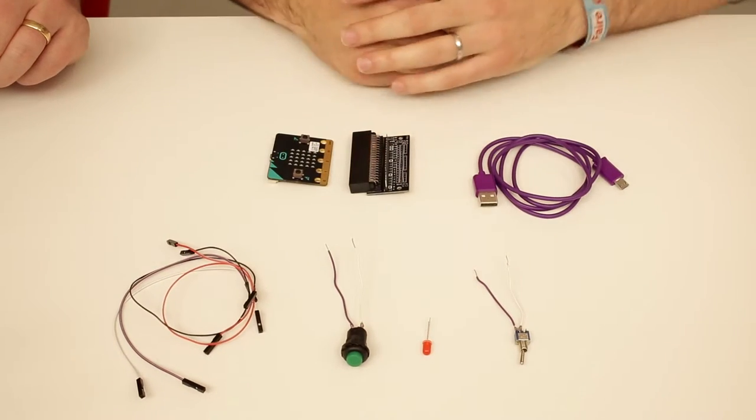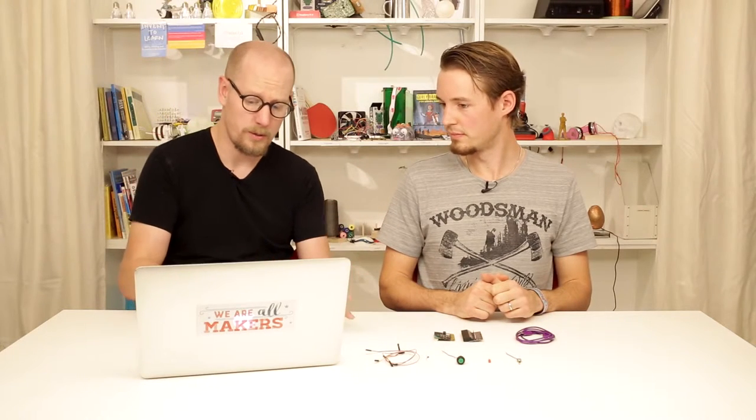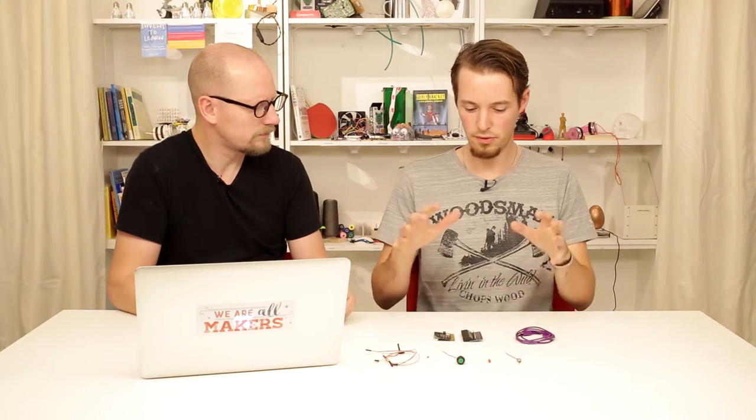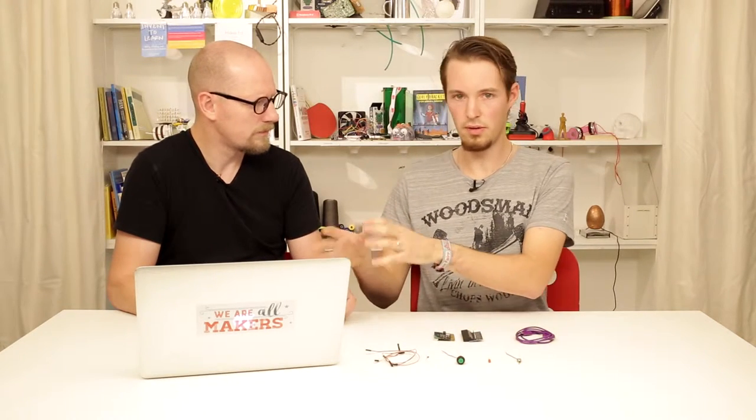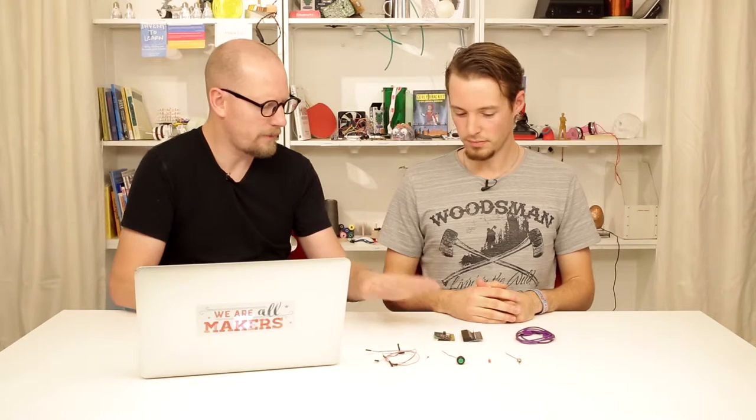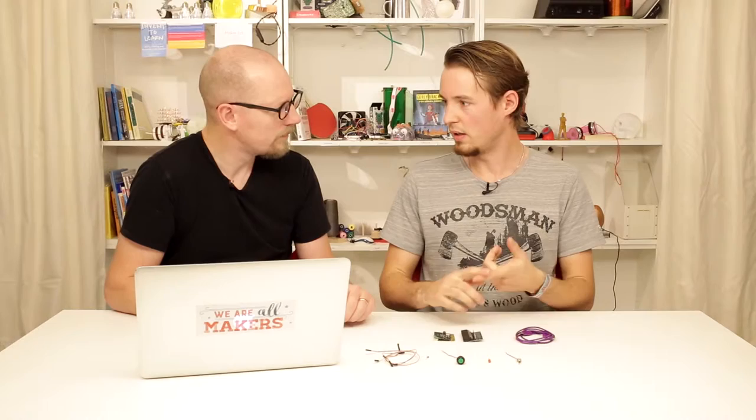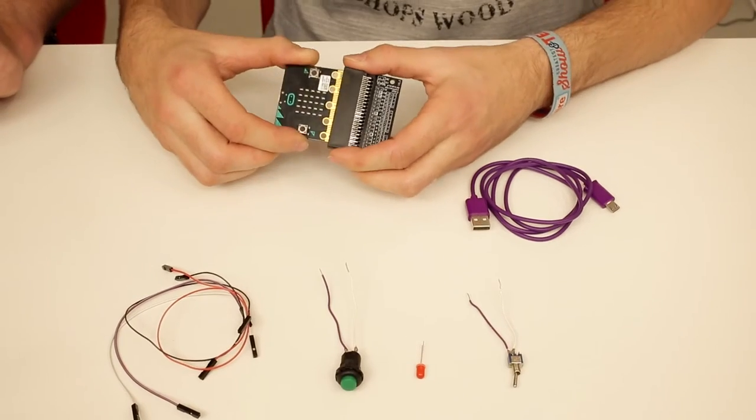We need to connect the electronics and code. Where do we start? Basically it doesn't matter if you first connect the electronics or do the coding, but let's start with the electronics. Should we start with a button perhaps? Sure, let's make it so when we press the button the LED goes on.